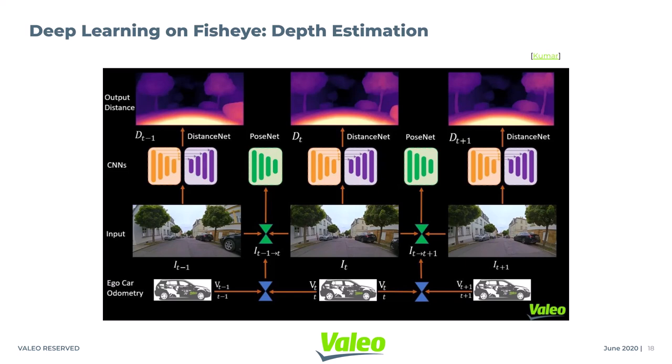Once we have the scale-aware transformation, we can project the distance point at time t-1 to time t and then to image coordinates at time t to compute the reprojection loss. Assuming no moving objects and epipolar constraints are satisfied, we should be able to minimize this loss for optimal distance estimation. The same process is repeated between different pairs of frames in forward and reverse directions.